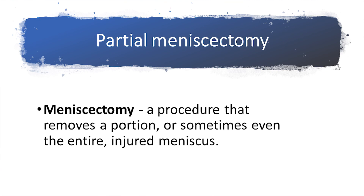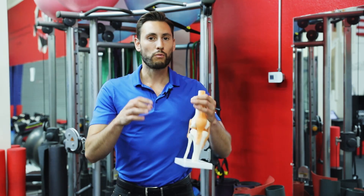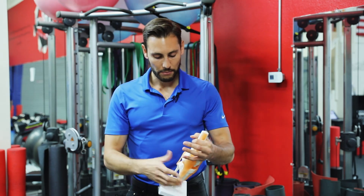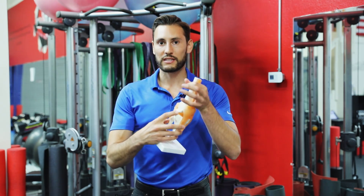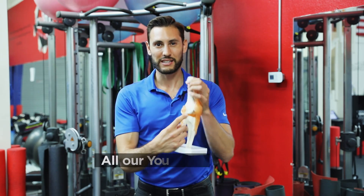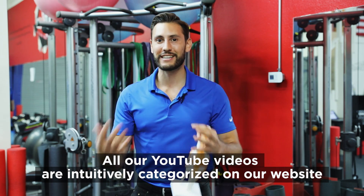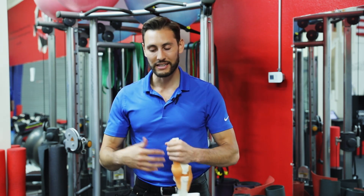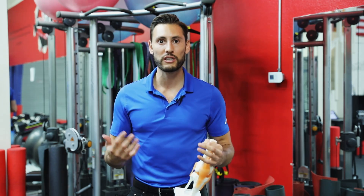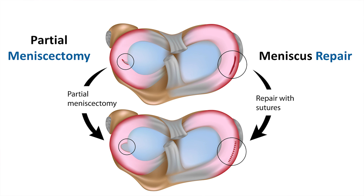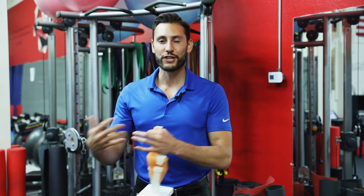A partial meniscectomy means that they are removing a portion of the meniscus that is torn. For example, if you have a lateral meniscus tear — pain on the outside of your knee, you experience catching, clicking, locking, and it doesn't get better with rehab or exercise but instead gets worse — you have a loss of motion in the joint, and your best option is a partial meniscectomy. The surgeon will cut out that torn flap and then you will initiate rehab afterwards.